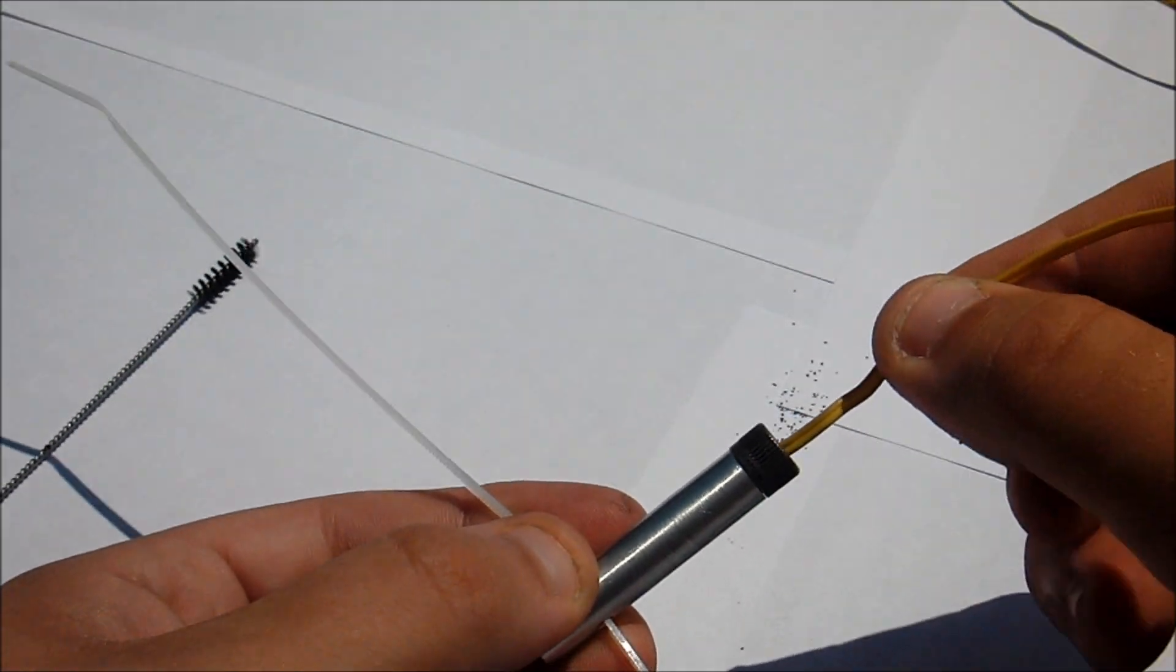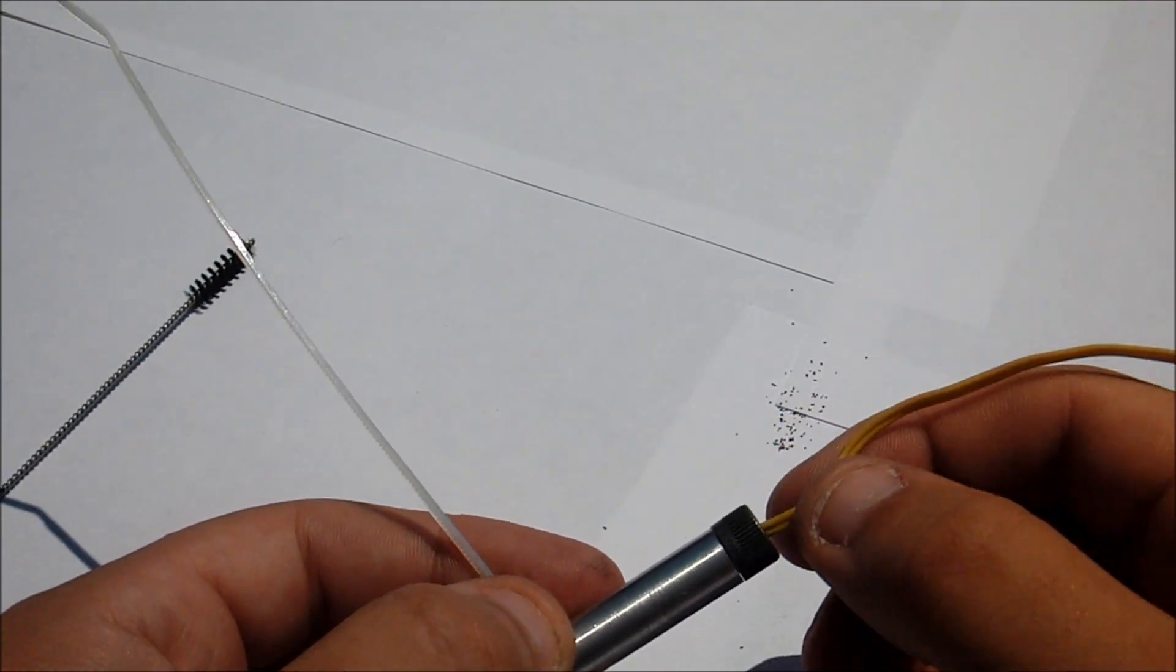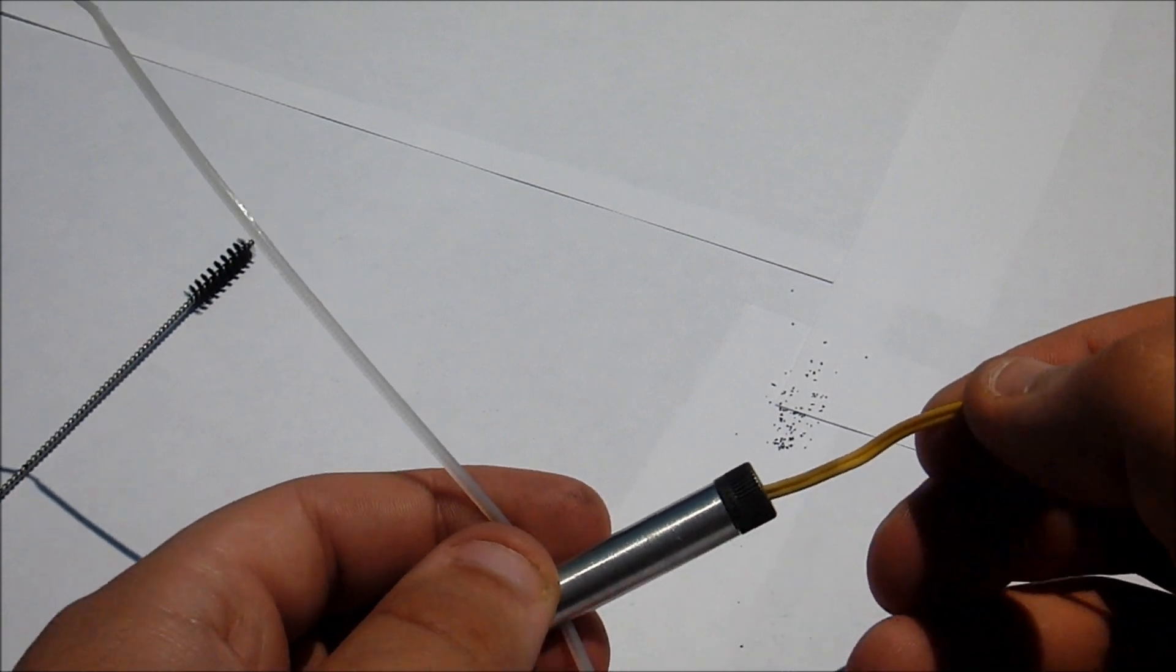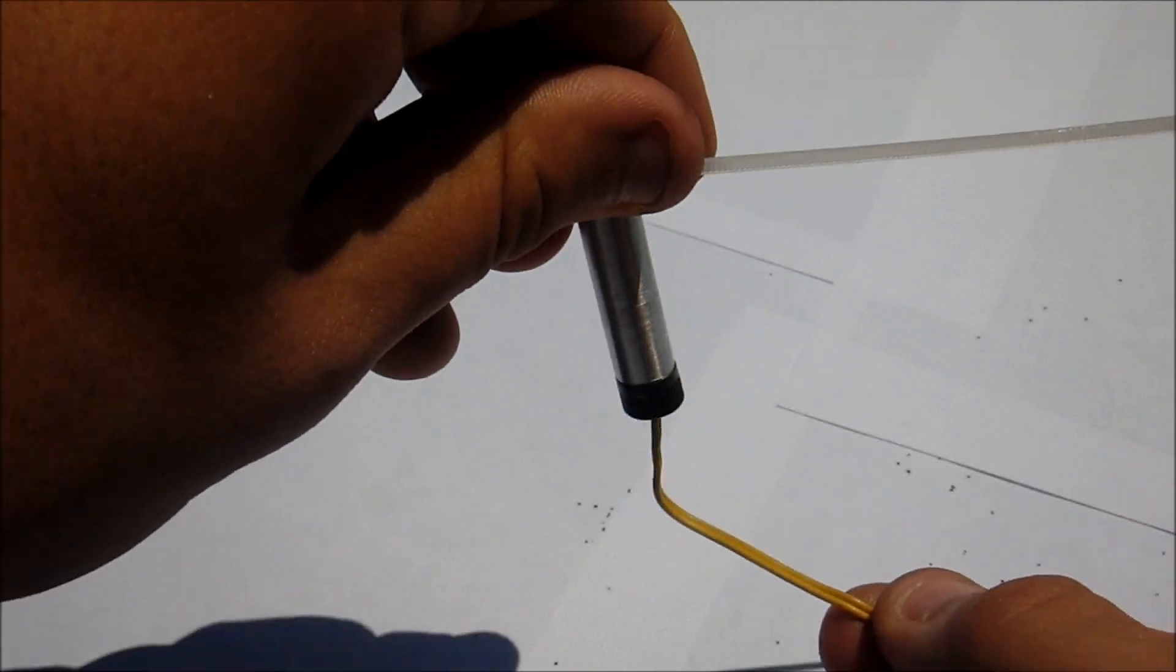Now when you notice, you can push the e-match in and out a little bit. That's not good still. Even though we put one o-ring on it, if it's pushed forward, black powder can still come out.